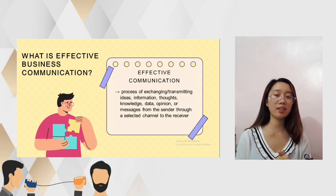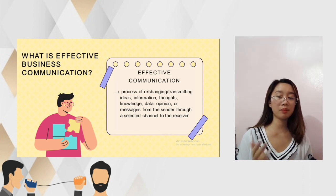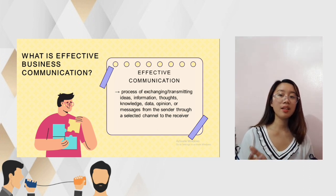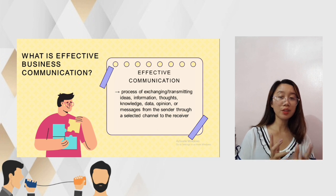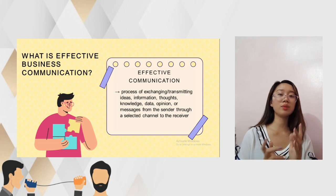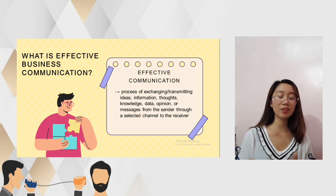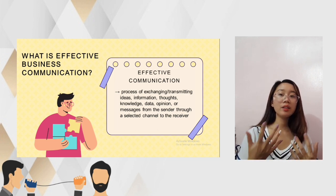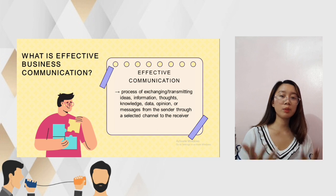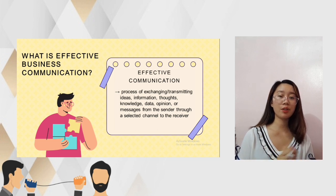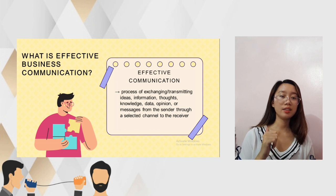Effective communication is a cyclic process that starts with the sender and also ends with the sender, because the sender will receive a response or feedback from the receiver of the information or the messages.